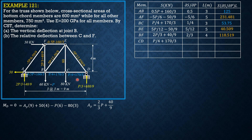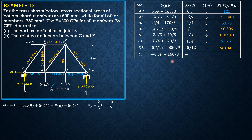Member CD: S equals P over 4 plus 170 over 3, partial derivative 1/4, length 3 m, product is 53.75. Member DE: S equals negative 5P over 12 minus 850 over 9, partial derivative negative 5 over 12, length 5 m, product is 248.843. Finally, member EF: S equals negative 0.5P minus 160 over 3, partial derivative negative 0.5, length 3 m, product is 125.